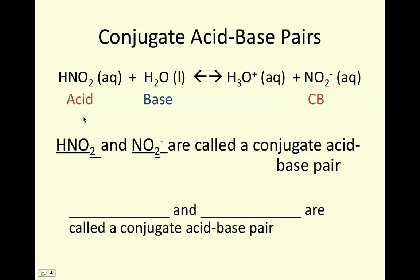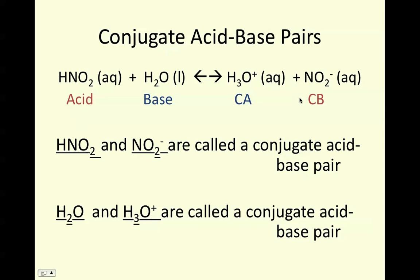If I pair these, HNO2 and NO2- differ by one proton, so this is an acid and its conjugate base. H2O and H3O+ — hydronium — are also a conjugate acid-base pair in this case. They differ by the presence of one proton.